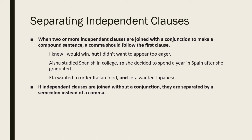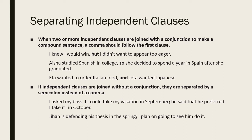If independent clauses are joined without a conjunction, they are separated by a semicolon instead of a comma. For example: 'I asked my boss if I could take my vacation in September; he said that he preferred I take it in October.' Both are independent clauses not joined by a conjunction, so a semicolon is used, not a comma. Only when two independent clauses are joined with a conjunction do we use a comma.